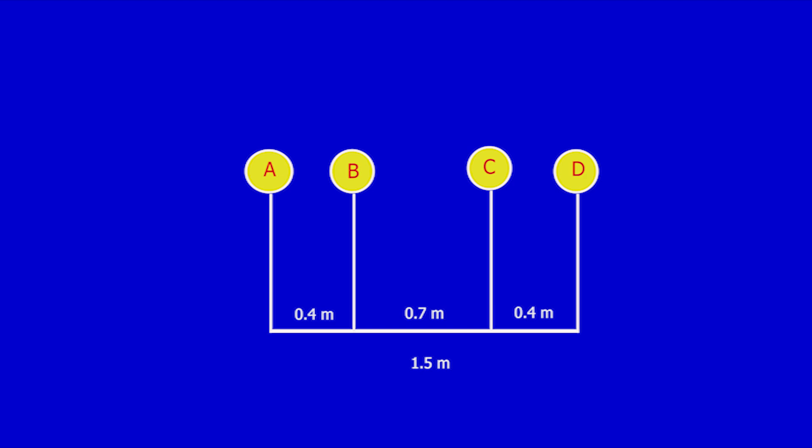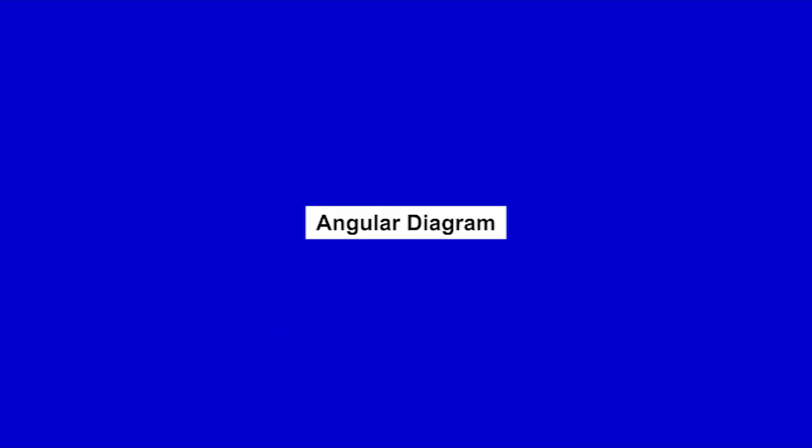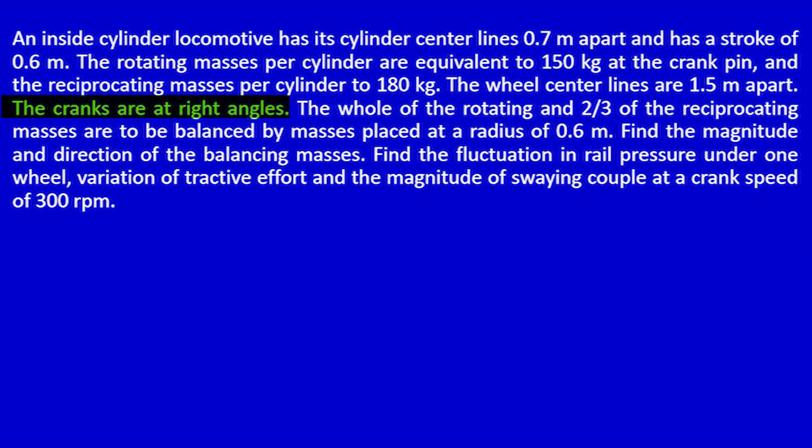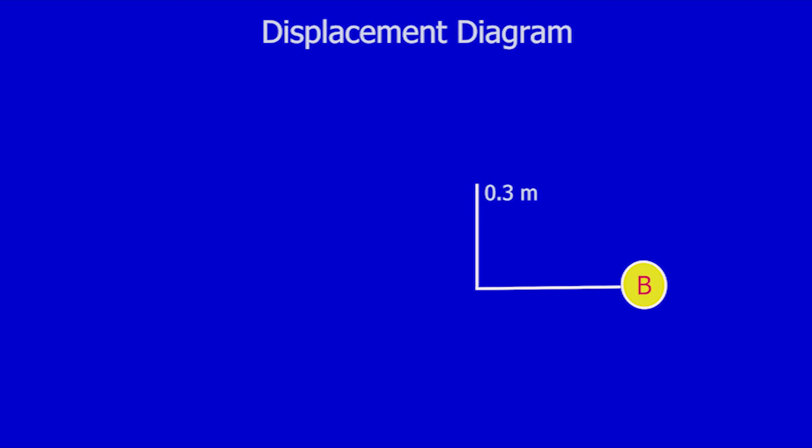From this diagram, I can see that the order of the planes are A, B, C, D. Next, I will create the angular diagram. The cranks are at right angles, which means cylinders B and C are 90 degrees to each other. So I will take plane B as the horizontal plane and mark plane C at 90 degrees to plane B.